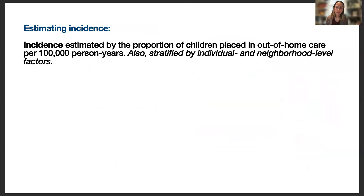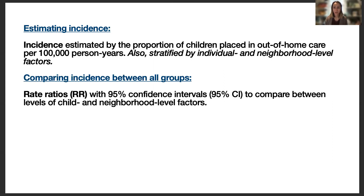Our statistical analysis plan was comprised of a few measurements. The first is estimating incidence, crudely estimated as the proportion of children placed in out-of-home care per 100,000 person years. We also calculated this stratified by individual risk factors, allowing us to compare incidence among male and female children as well as neighborhood level factors — for example, comparing incidence between higher and lower median incomes. To compare incidence between groups, we used rate ratios with their corresponding 95% confidence intervals, where a confidence interval bounded away from one indicates a significant difference.